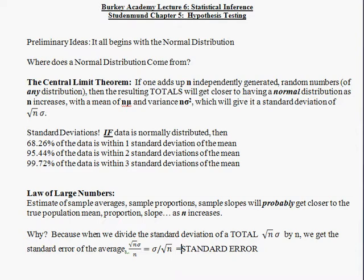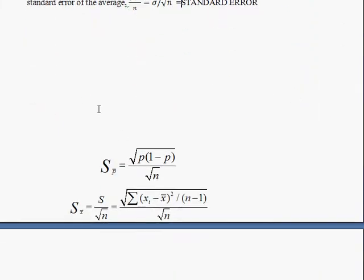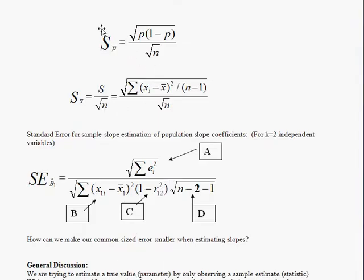A standard error for a proportion is the common distance that a sample proportion will be from the real proportion. For example, if you take a coin and flip it 20 times, you can calculate the standard error for the proportion. There are also standard errors for slopes. The standard error for a proportion is calculated as the square root of p times (1 minus p) divided by the square root of n.